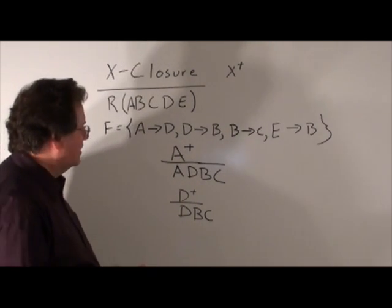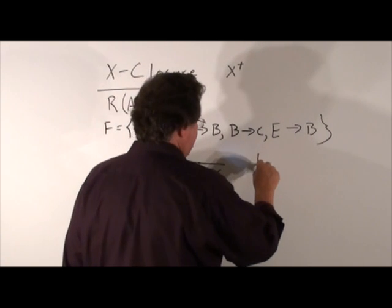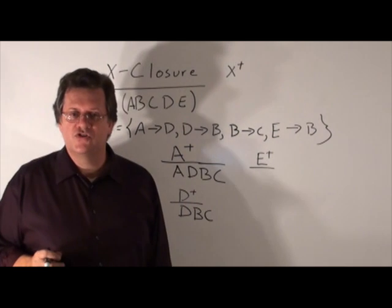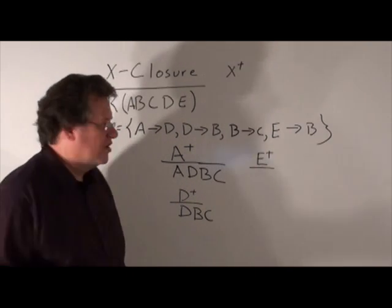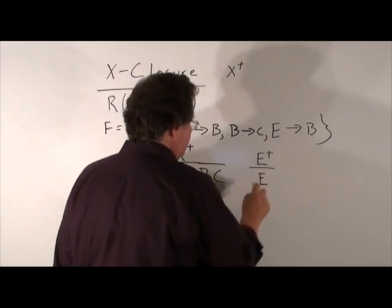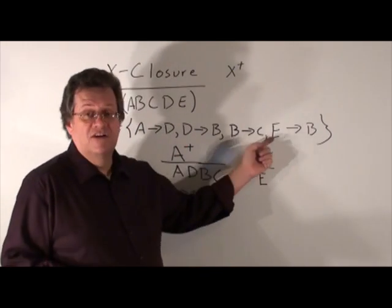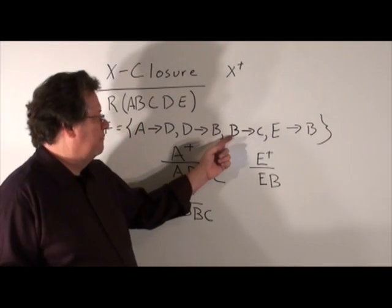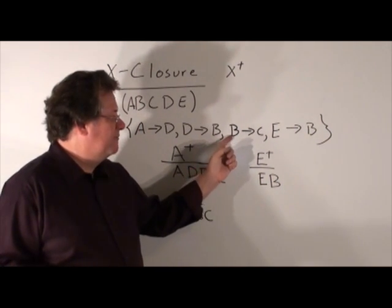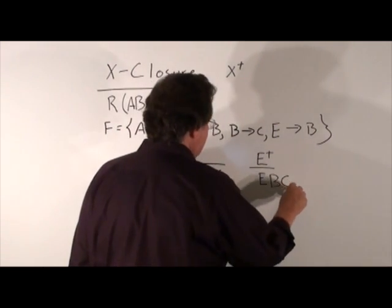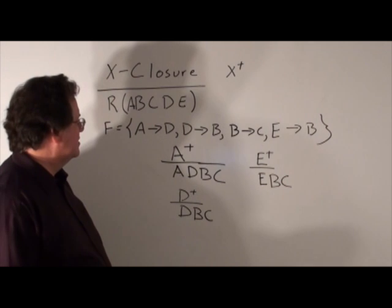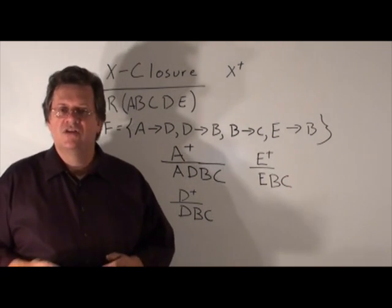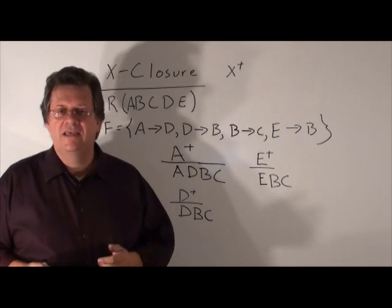Let's try one more. Let's try E-closure. Well, E-closure starts off with the E. We see E functionally determines B, so we add the B there. B, by transitivity, B functionally determines C, so we add the C there. And are we done at that point? Yes, we are, because we cannot derive any other attributes. So, E-closure would be E, B, C.